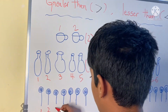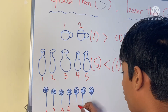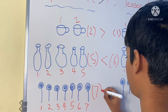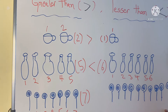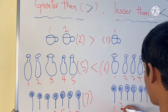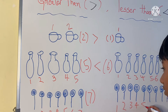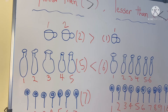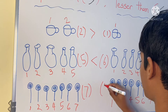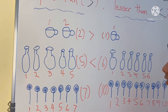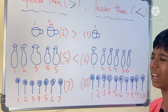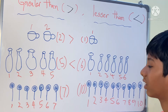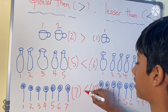Let us count these lollipops. 1, 2, 3, 4, 5, 6, 7 — there are 7. Now how many lollipops are in the other group? 1, 2, 3, 4, 5, 6, 7, 8, 9, 10 — there are 10 lollipops. Can you tell me the relationship between 7 and 10? 7 is lesser than 10.